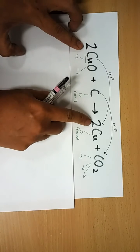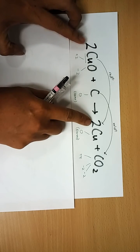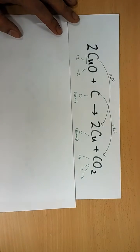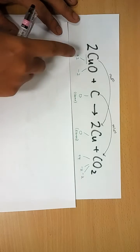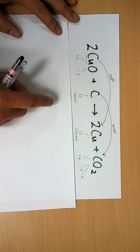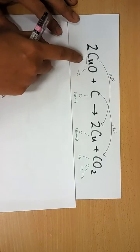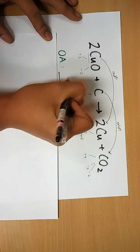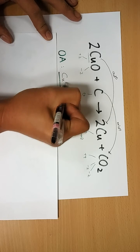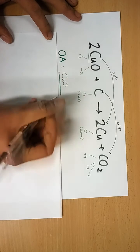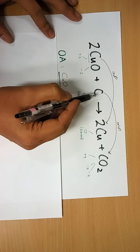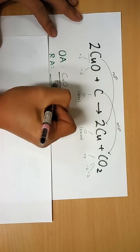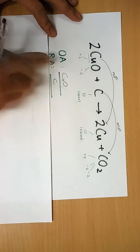Does the balance number come into play? The balance number does not come into play in oxidation and reduction. The one whose oxidation state decreases is copper, so the oxidizing agent is the one that is reduced. You have to write down the full thing — not just copper, but copper oxide.